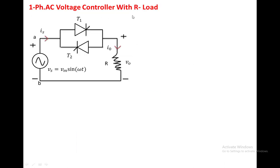Single phase AC voltage controller with a resistor load — this is the circuit diagram. T1 and T2 are connected anti-parallel. Here we have taken the resistor load. The positive direction of the output voltage, positive direction of the output current, and positive direction of the source current are indicated. Terminal A and terminal B are marked. The input voltage is represented as Vs equal to Vm sin omega t.